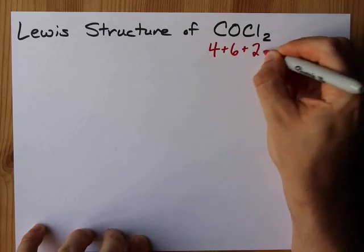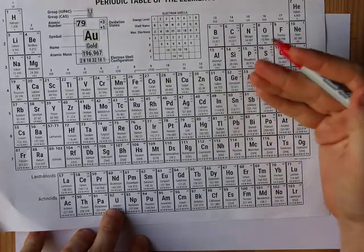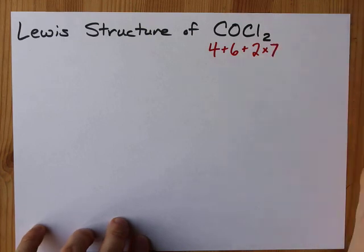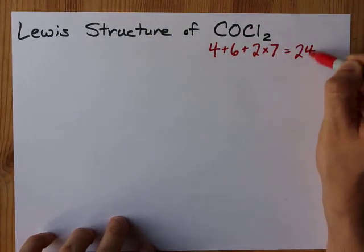6 for oxygen. I have 2 chlorines. Chlorine's a halogen in group 17. It brings 7 valence electrons. 7 for each chlorine. That's 10 and 14, that's 24 electrons total.